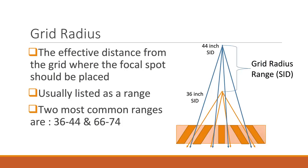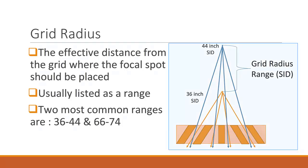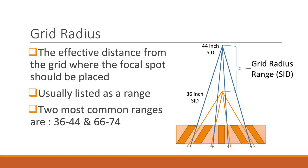Another detail often listed on the grid label is the grid radius. This is the effective distance a focused grid can be utilized. The range of SIDs are listed so the technologist knows at what source-to-image receptor distance range is feasible for the grid to be effective. The two most commonly manufactured grids are based on the two most commonly employed SIDs: 40 inches and 72 inches. In this example, we see that the grid will work at an SID range from 36 inches to 44 inches, meaning the grid radius is 36 to 44 inches.